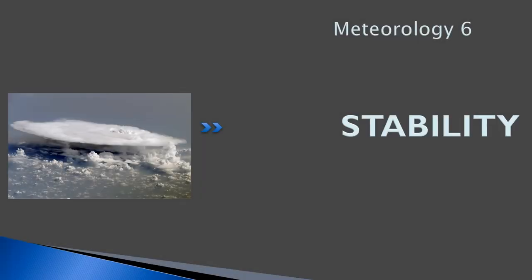Hello, everyone. Welcome back to FreepilotGroundSchool.ca. This is the sixth lesson in meteorology. We're going to be discussing stability — specifically, the stability of the air and how it relates to weather phenomena. Here's a nice little picture from space of a very large thunderstorm, which will be indicative of unstable air. We'll learn more about that in this lesson.